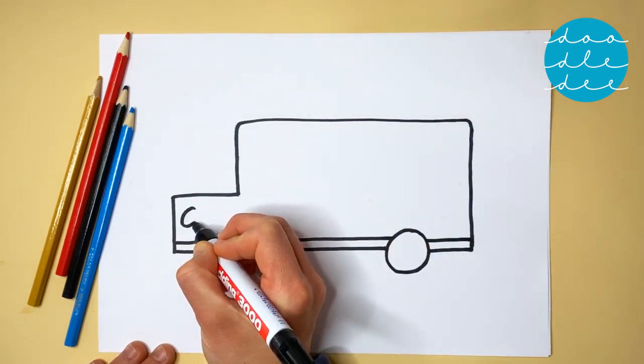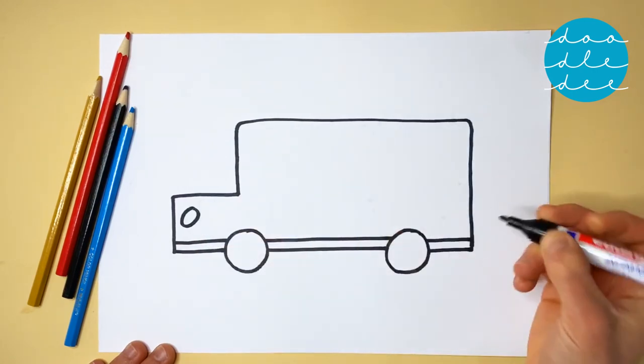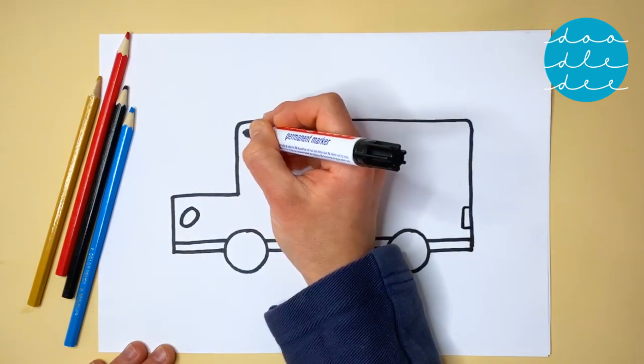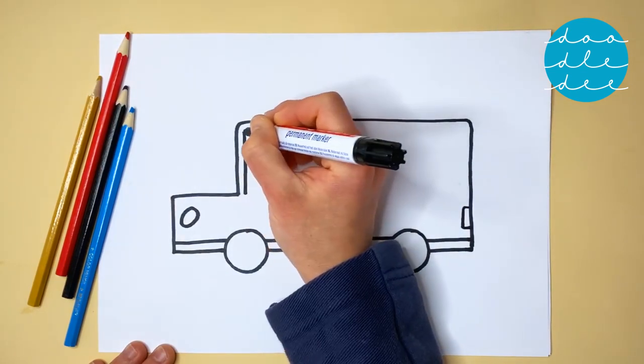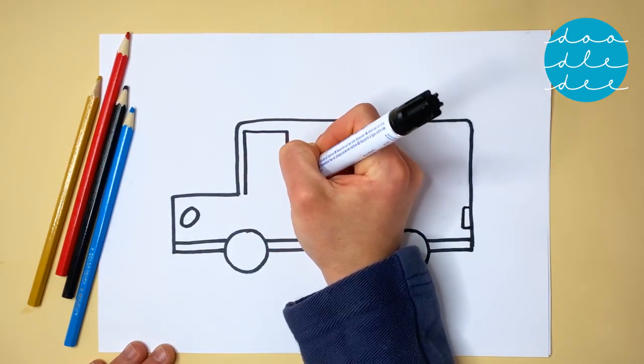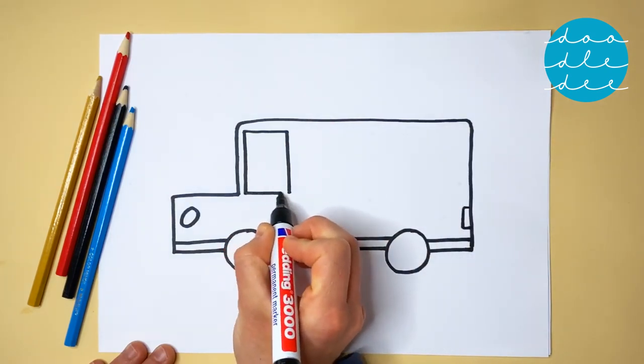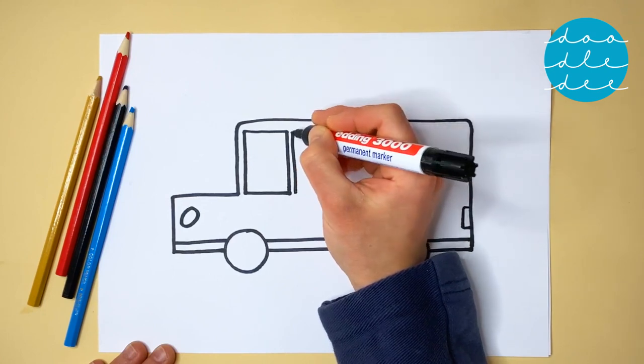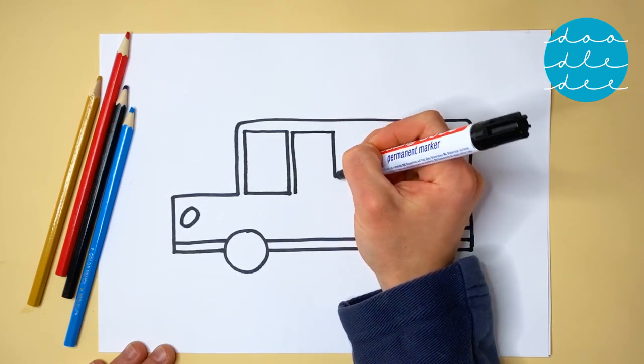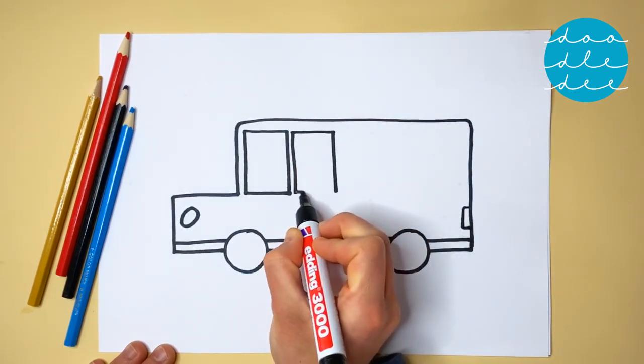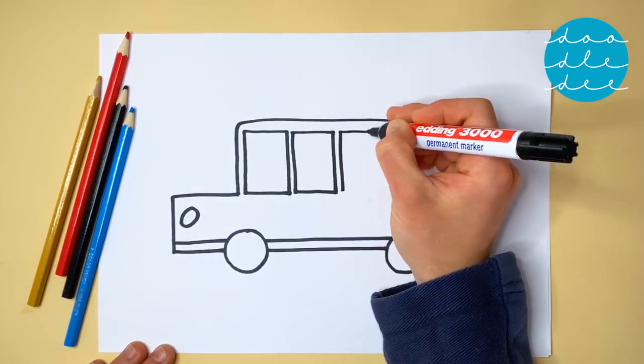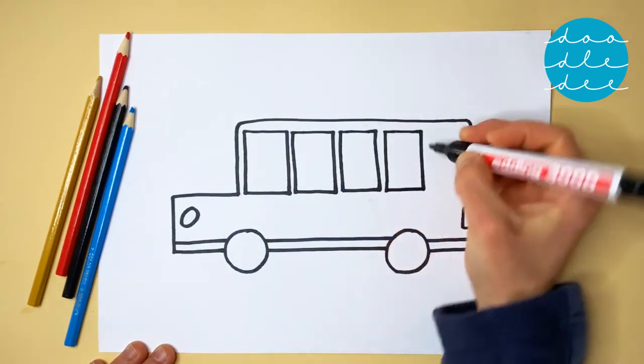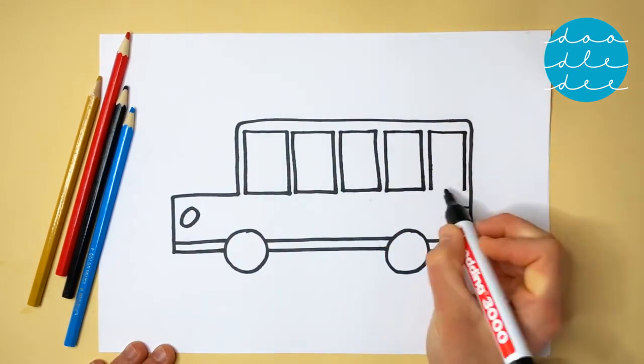Draw a circle light on the front, and a rectangle light on the back. We need some windows. One for the driver. And then one, two, three, four more rectangle windows!